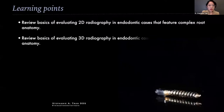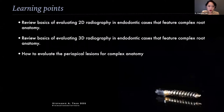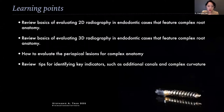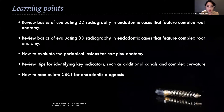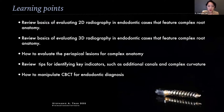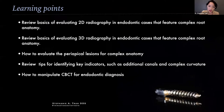Today we're going to discuss the basics of how to evaluate 2D radiography, 3D radiography, evaluating the periapical lesions for complex anatomy, evaluating 2D radiography and how to measure things, how to anticipate things, what are the key indicators for additional canals and complex curvature, and when using 3D radiography, how to actually manipulate the CBCT and how to read it.